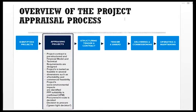Overview of the project appraisal process. The stages are: identifying projects, appraising projects, structuring tender and contract, tender and award, delivering and commissioning, and operating and maintaining.